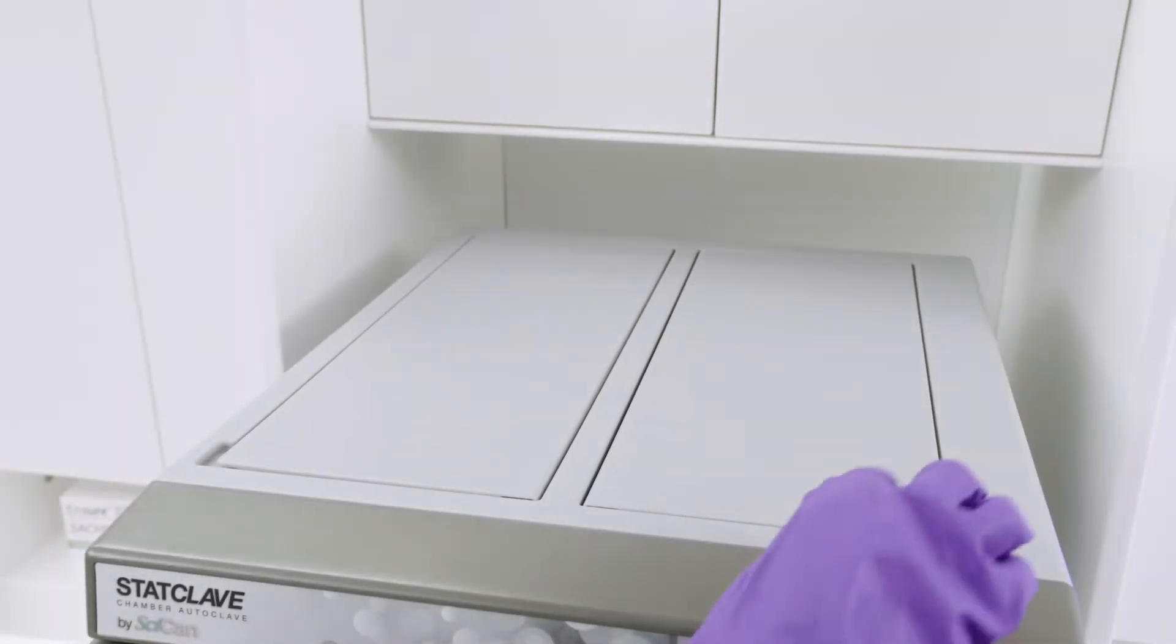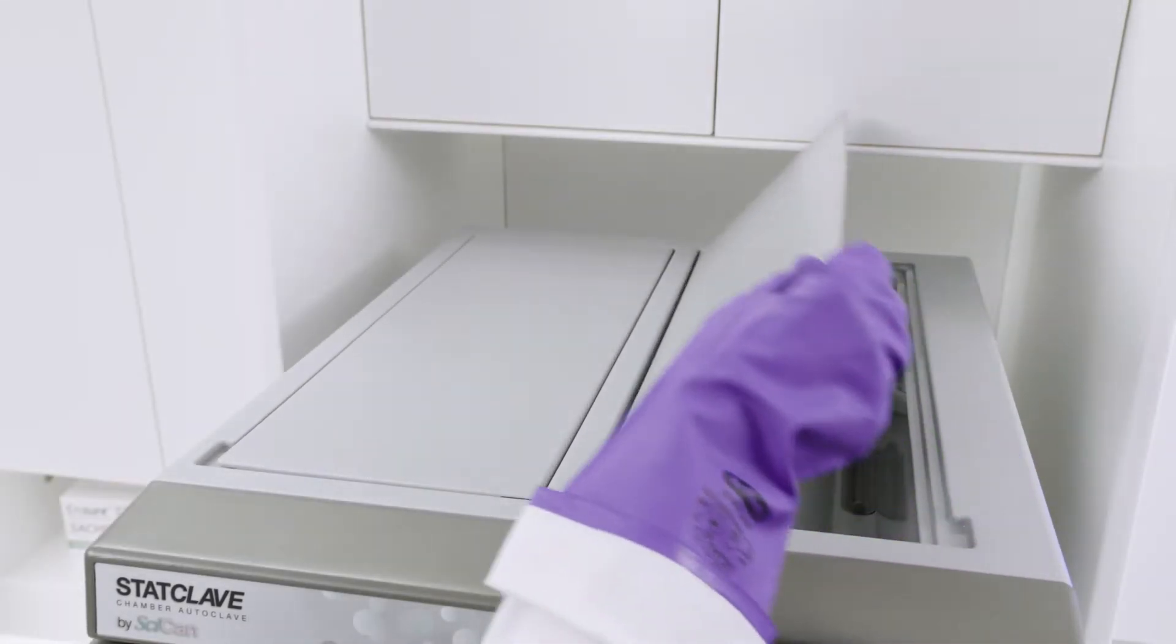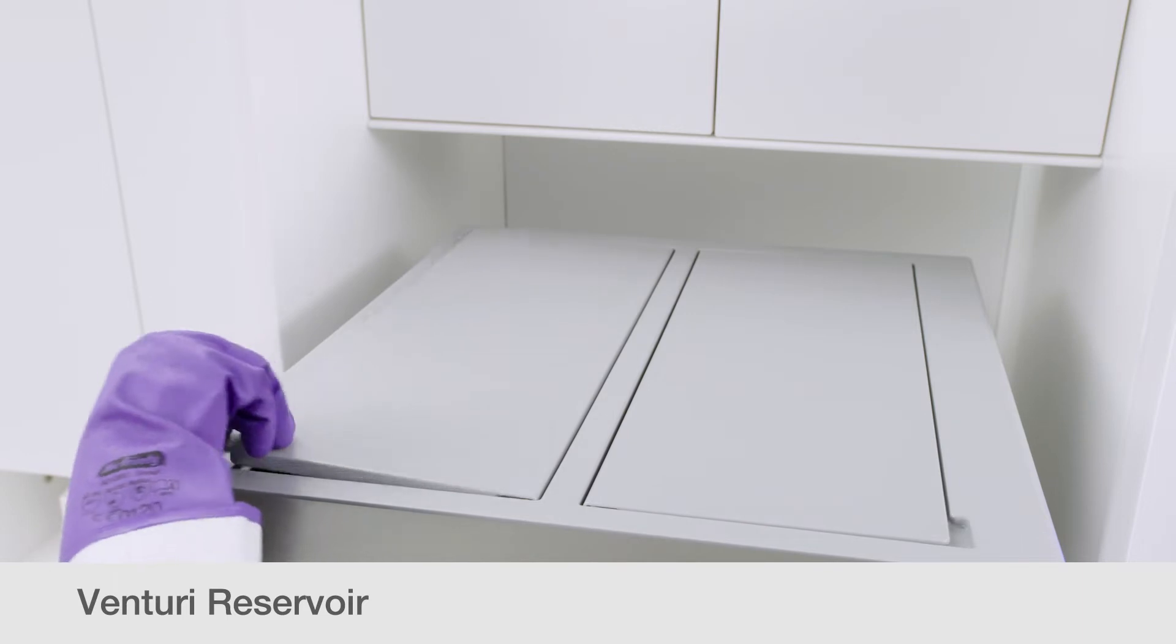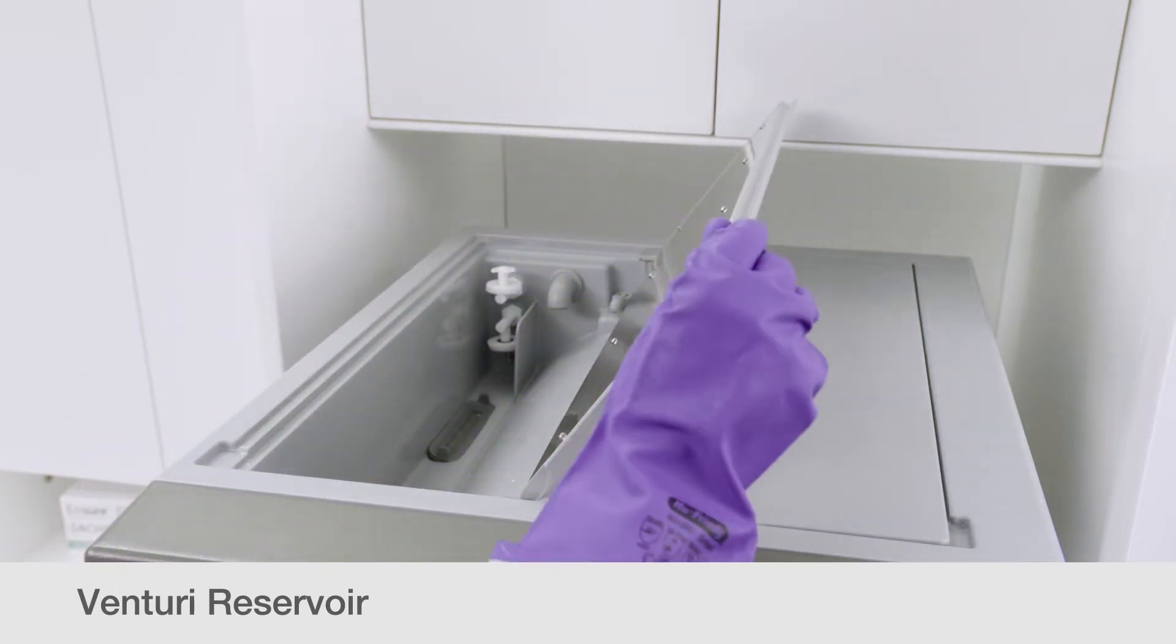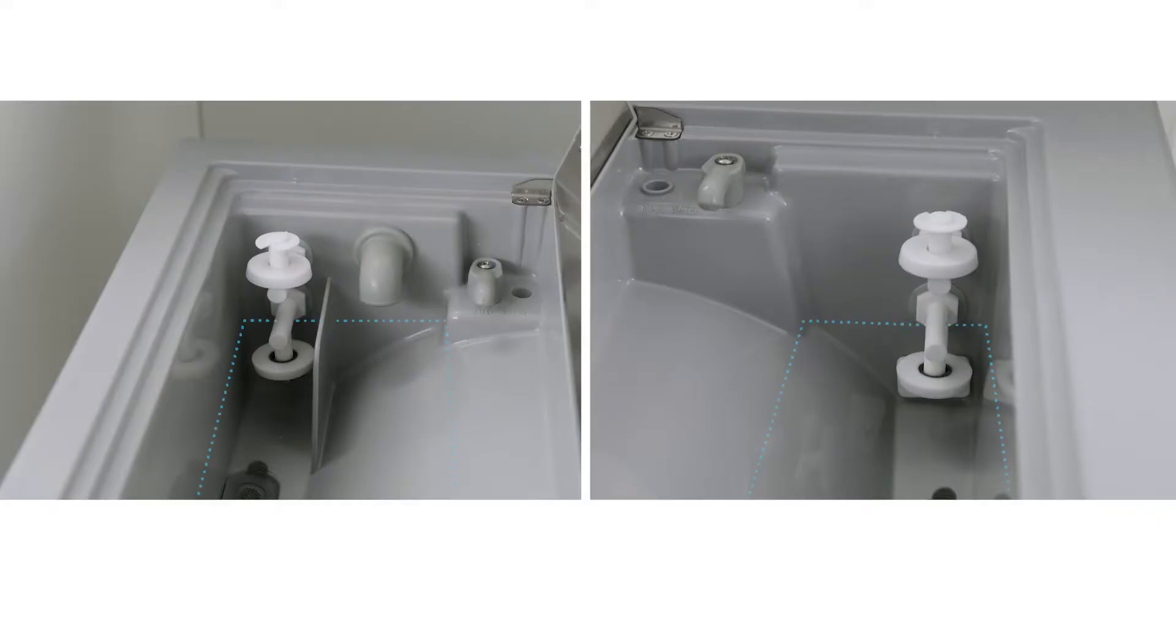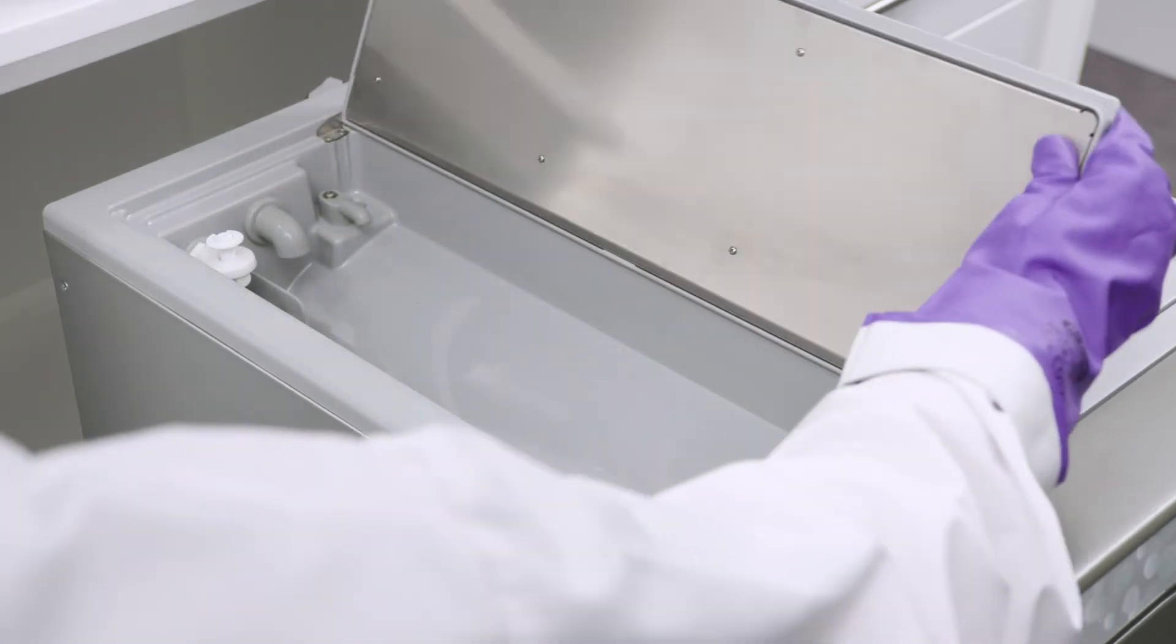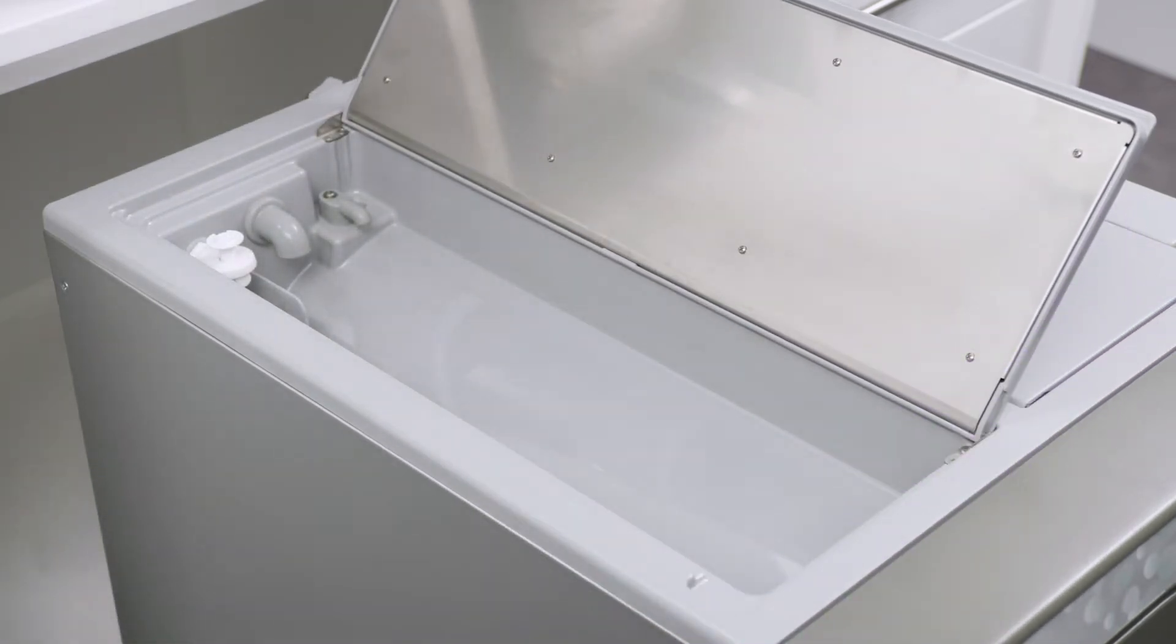The StatClave has two accessible reservoirs on the top of the unit. The Clean Water Reservoir is located on the top right of the unit and the Venturi Reservoir on the top left. For the unit to operate, reservoirs must contain the minimum required water levels. The StatClave unit uses water from the Venturi Reservoir to generate vacuum draws at the beginning and end of each cycle.